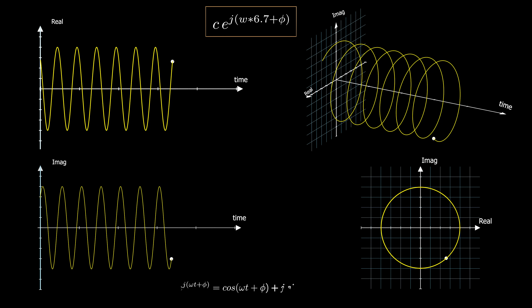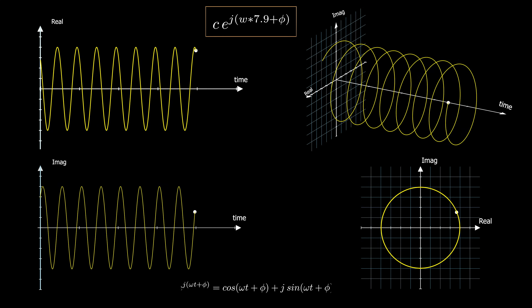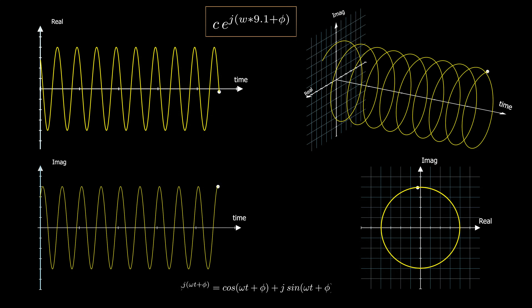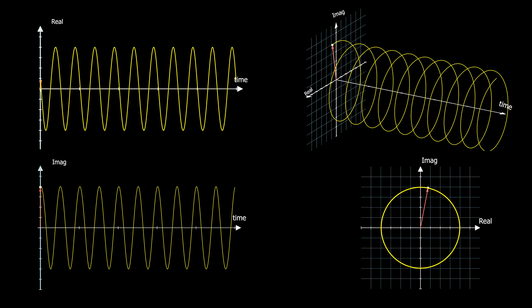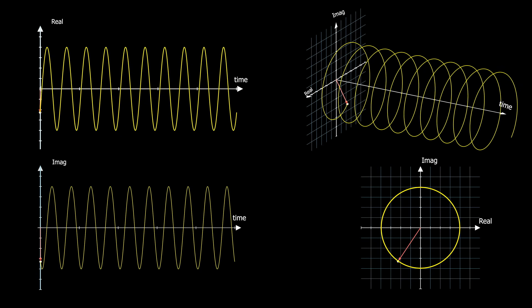From Euler's formula, the cosine function is the real part of the complex exponential, while sine is the imaginary part. Notice that the phase determines the point on the circle at which we start rotation. Changing the value of phi shifts the sinusoid.